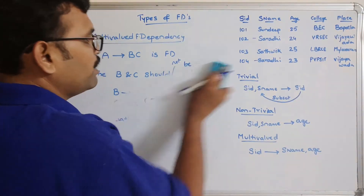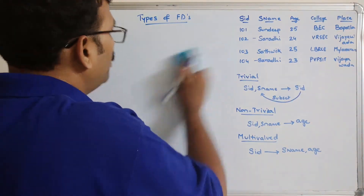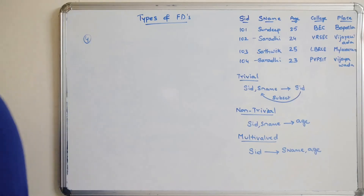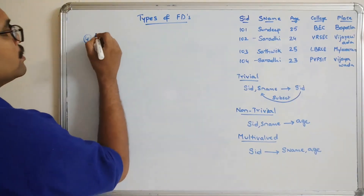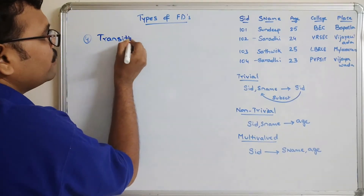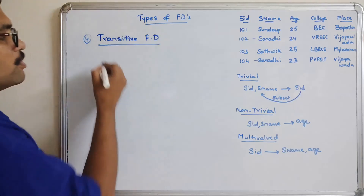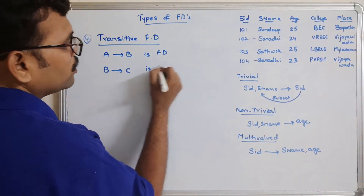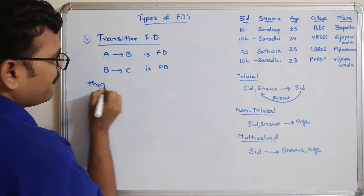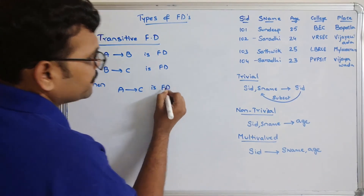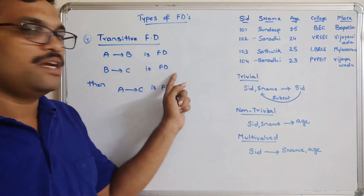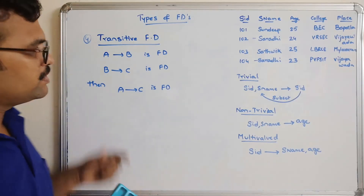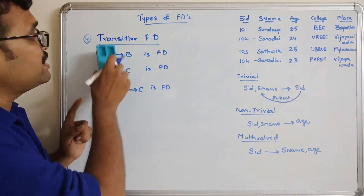The fourth and last type is transitive functional dependency, which we already observed in Armstrong's axioms as the transitivity rule. If A tends to B is functionally dependent and B tends to C is also functionally dependent, then A tends to C is functionally dependent. Such a derived dependency is called transitive functional dependency.